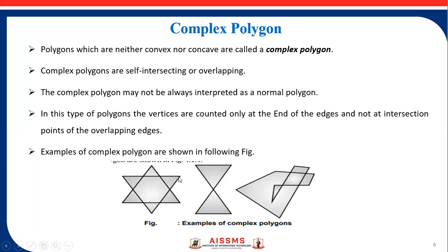Like this 1, 2, 3, 4, 5, and 6, like a star having 6 vertices. The vertices are counted only at the end of the edges and not at the intersection points of the overlapping edges. Complex type of polygon is shown in the figure.